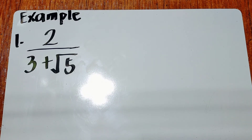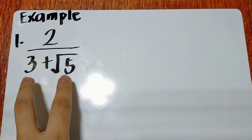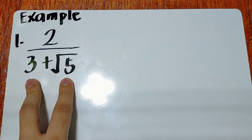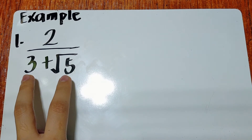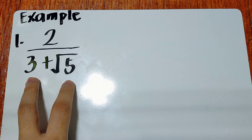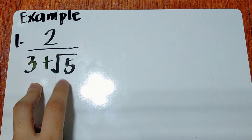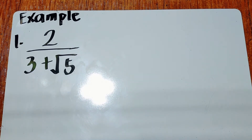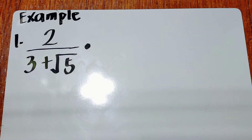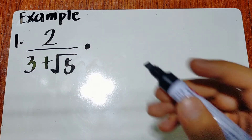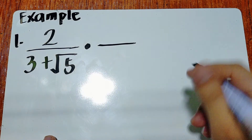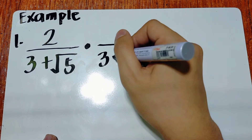Applying the concept, example number one: 2 over 3 plus square root of 5. This is what we call a binomial denominator. To answer this, we use the conjugate. The conjugate of 3 plus square root of 5 is 3 minus square root of 5 — just change the sign.